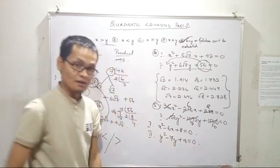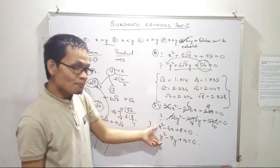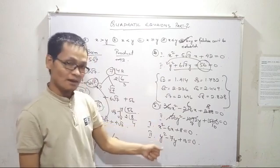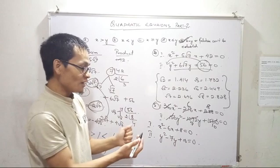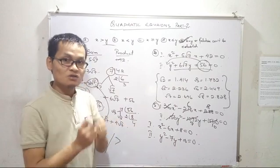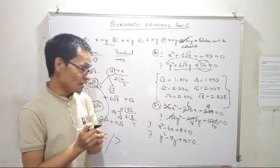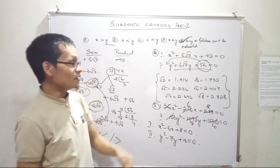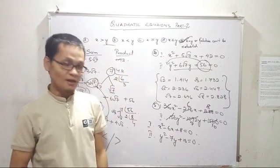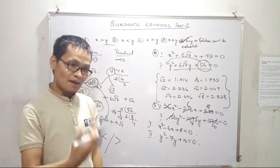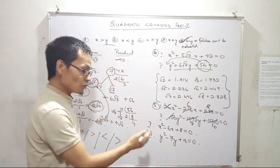Using sum and product, we find the x values and y values for comparison. So here is the conclusion of quadratic equations part 2, covering parts 3, 4, and 5.